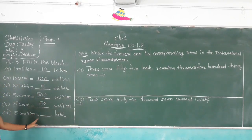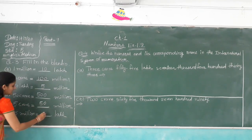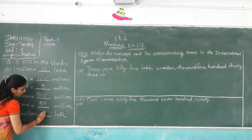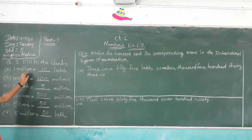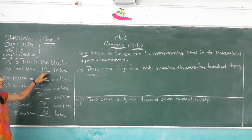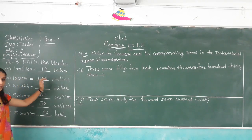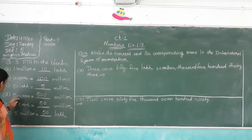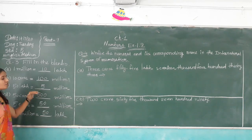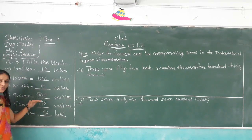5 million is equal to blank lakh. 5 million is equal to 50 lakh. Now let's revise: 1 million is equal to 10 lakh. 10 crore is equal to 100 million. 50 lakh is equal to 5 million. 50 crore is equal to 500 million. 5 crore is equal to 50 million.